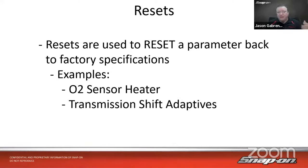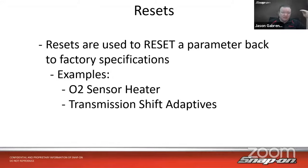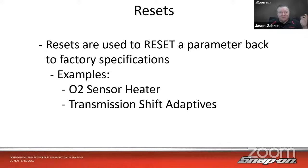Over time the amperage creeps up until eventually the sensor fails for one reason or another. When you replace it with a brand new sensor, the resistance is back down to where a new one would be — but the computer is still commanding considerably higher amperage based on the old sensor. This high amperage fed to a low-resistance heater will burn out the heater element pretty quickly, usually within the first few hundred miles.